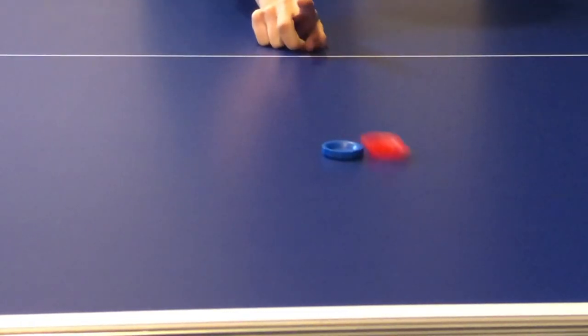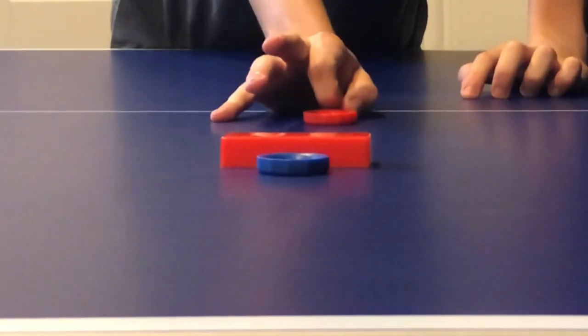When any piece falls off the table, either through a missed shot or by getting knocked off, it is also eliminated.